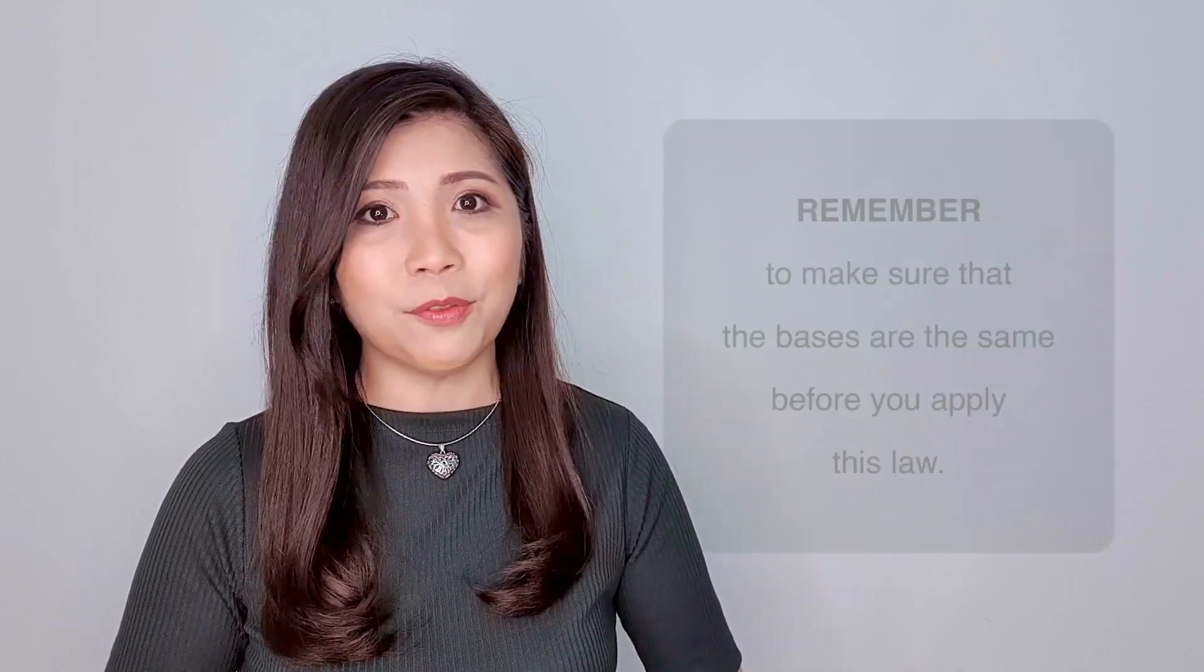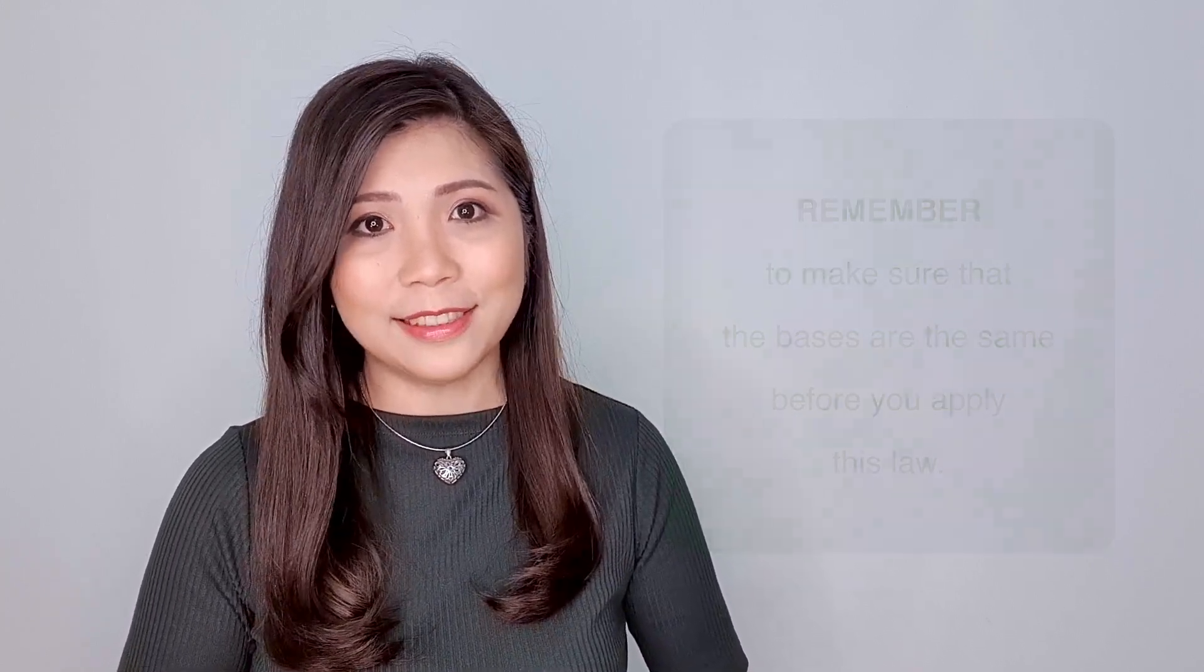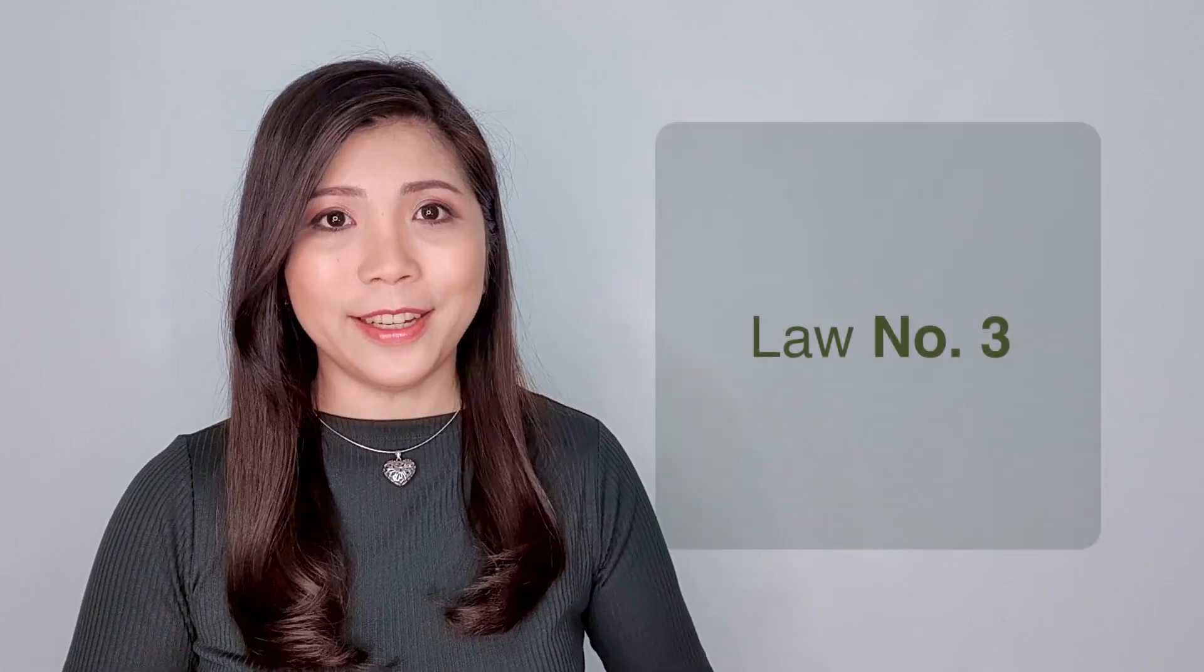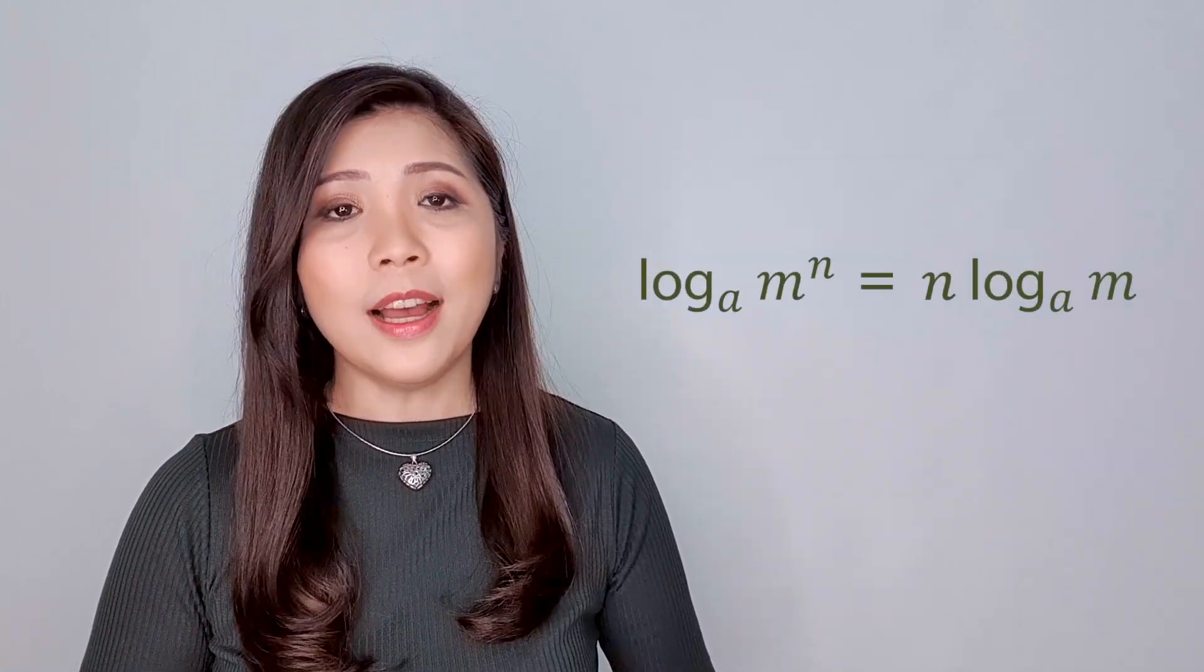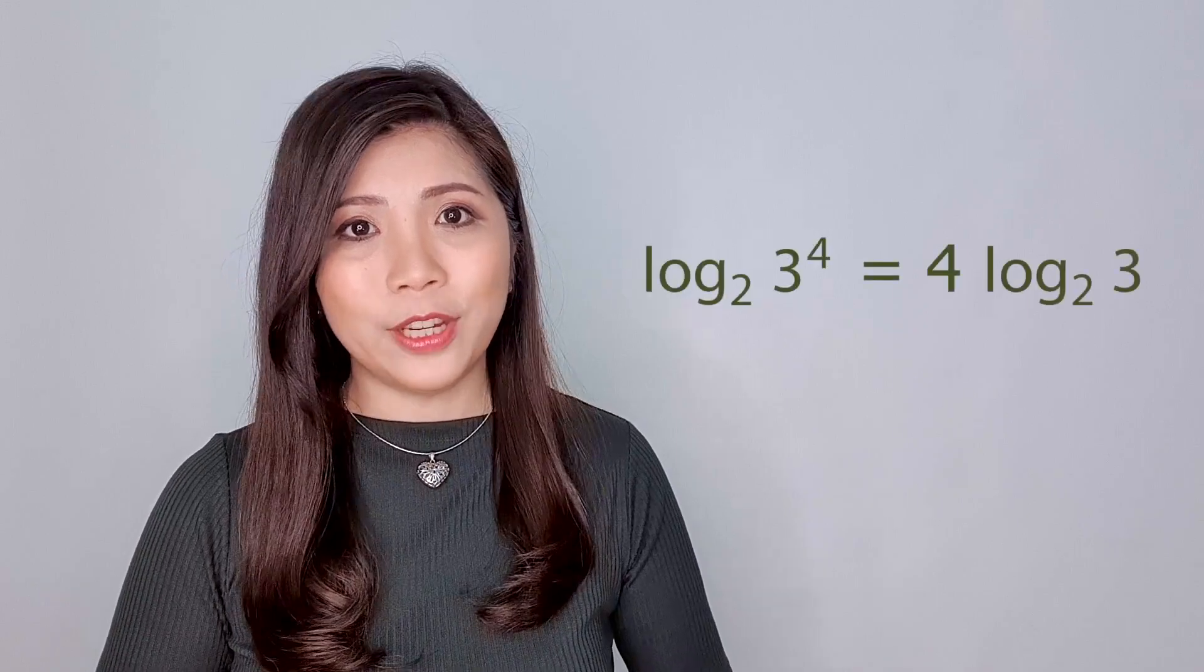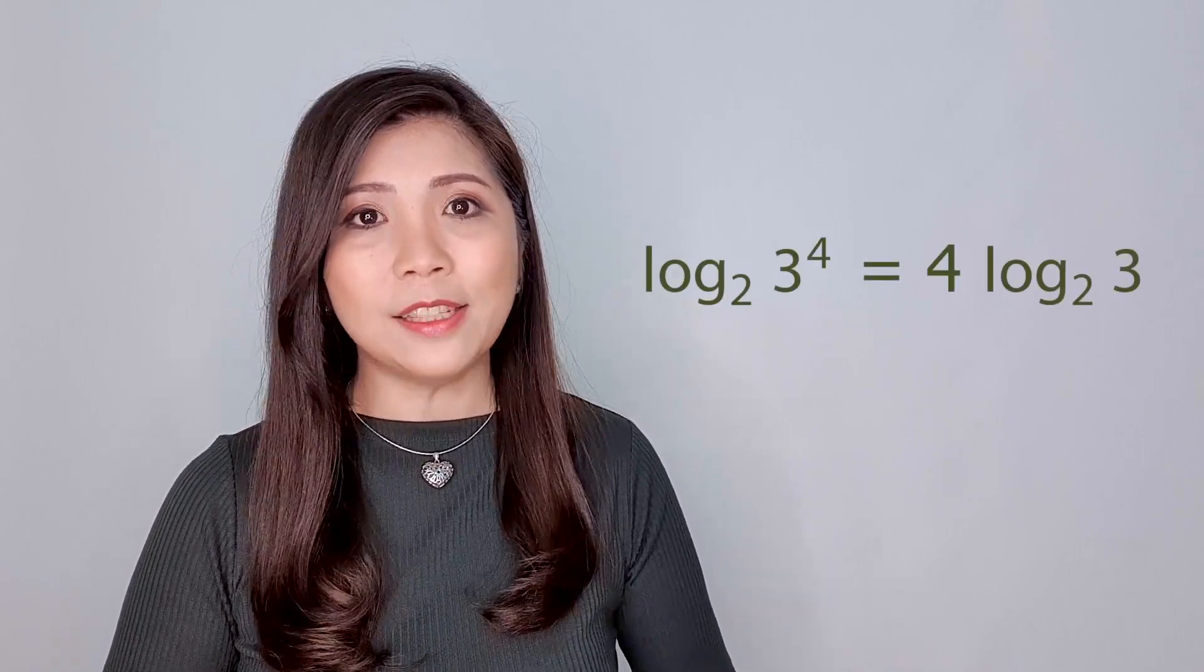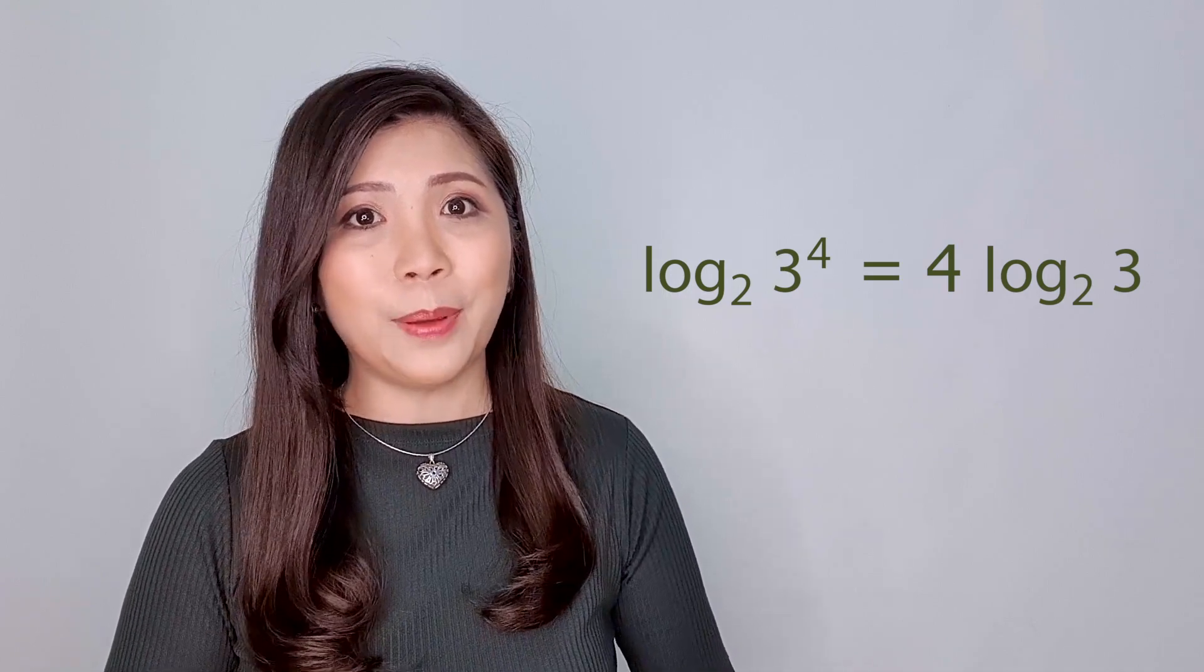So for this question, you will also have to make sure that the bases are the same before you apply this law. For law number 3, log n to the power of m base a is equal to m times log n to base a. For example, log 3 to the power of 4 base 2 is equal to 4 times log 3 to base 2.